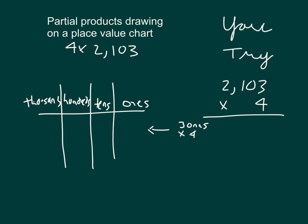So we have that place value chart. That first line should be three ones times four, which is twelve — which is one ten and two ones. The next line should be four times the one here. That one is worth one hundred, so that's one hundred times four, which is four hundred.